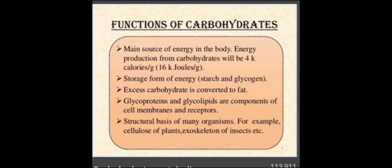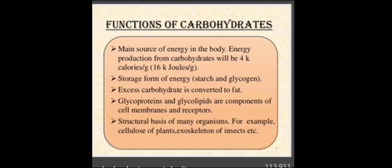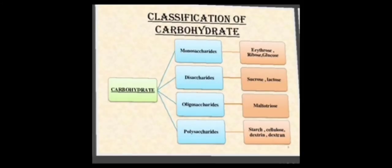Glycoproteins and glycolipids are components of cell membrane receptors and provide structural basis for many organisms, for example, cellulose in plants and the exoskeleton of insects.